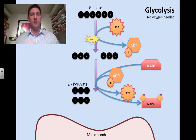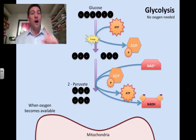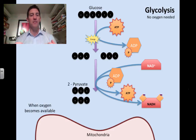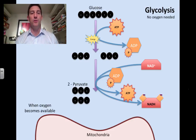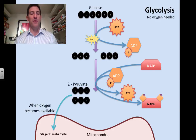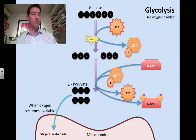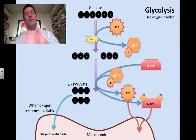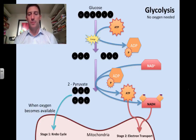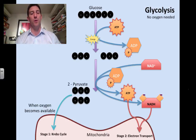So that's glycolysis — all happening outside the mitochondria in the cytoplasm. Now once oxygen is present, the mitochondria can take both the pyruvate and the NADH and use those to make energy. Pyruvate is going to enter stage one, which is the Krebs cycle, and the other energy — ATP and NADH — will be needed in stage two, which is the electron transport chain.